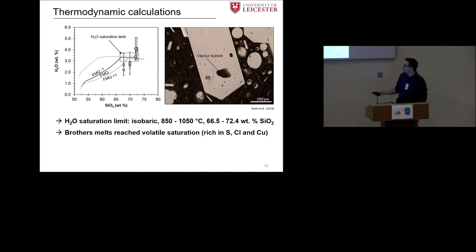We calculated the water saturation limit. We used isobaric conditions. Temperature range we suggest is representative for the Brothers melts in that compositional range. And the water saturation limit we got is basically in that gray box here. We are looking at somewhere around 3.5 weight percent of water. Then we used plagioclase melt hygrothermometry and the results you can see in those gray squares. And the water contents we got there basically overlap with the water saturation here.